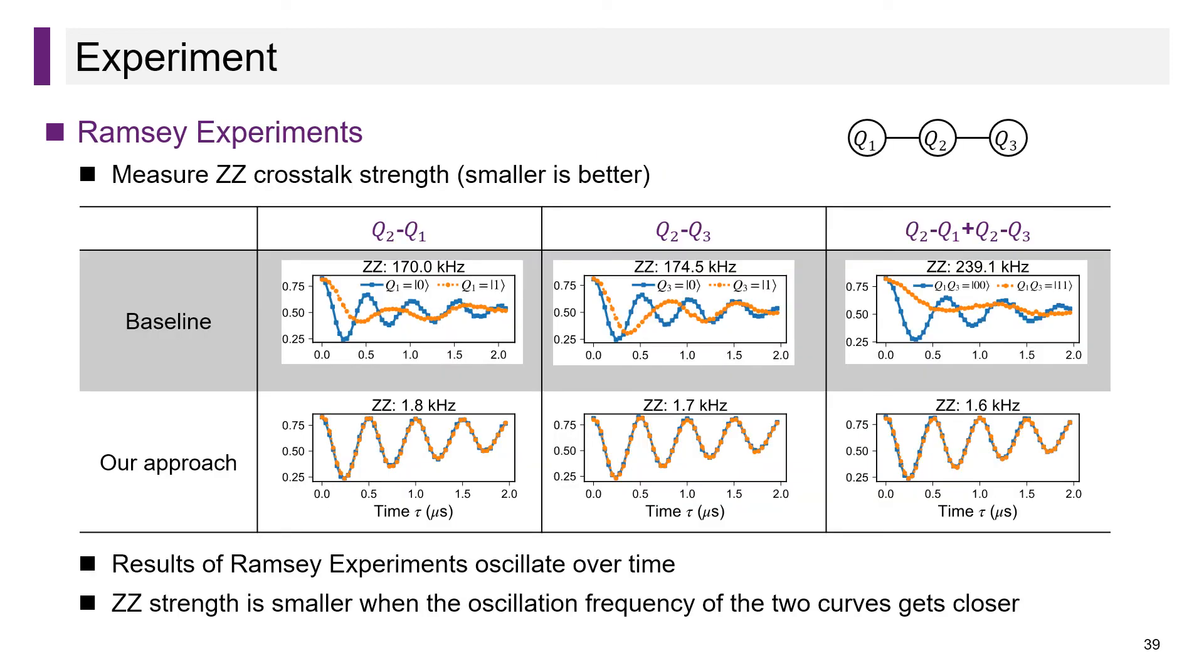Finally, we performed Ramsey experiments on a real device of 3 transmon qubits. Ramsey experiments are aimed at measuring ZZ crosstalk strength. We conducted three groups of experiments to measure strength on different couplings. The results of each experiment have two curves that oscillate over time. ZZ strength is smaller when the oscillation frequency of the two curves gets closer. It is shown that our approach can reduce ZZ strength by about two orders of magnitude. This indicates strong suppression of ZZ crosstalk.